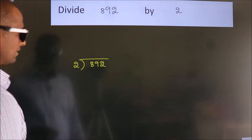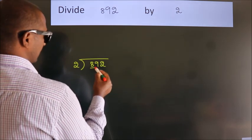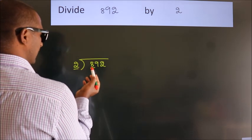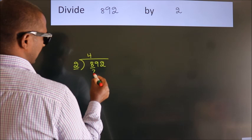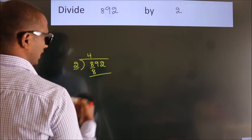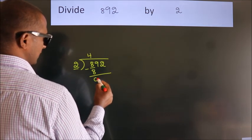Next, here we have 8, here 2. When do we get 8? In the 2 table, 2 times 4 is 8. Now we should subtract, we get 0.